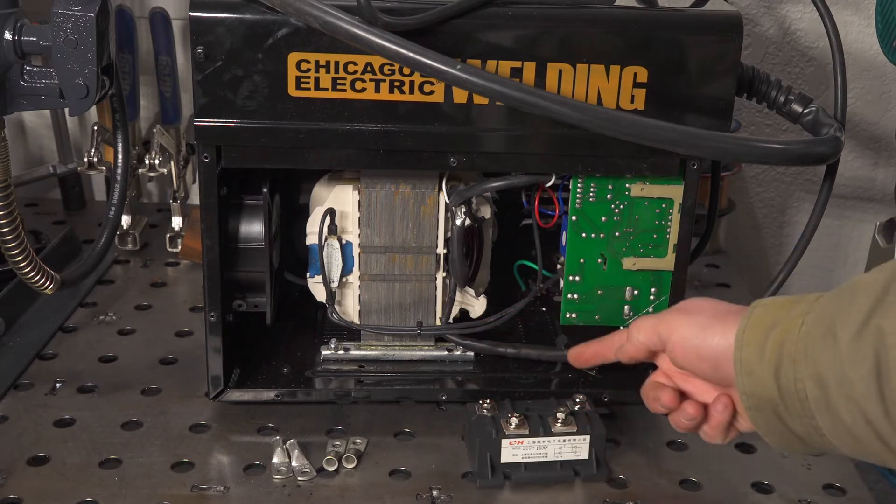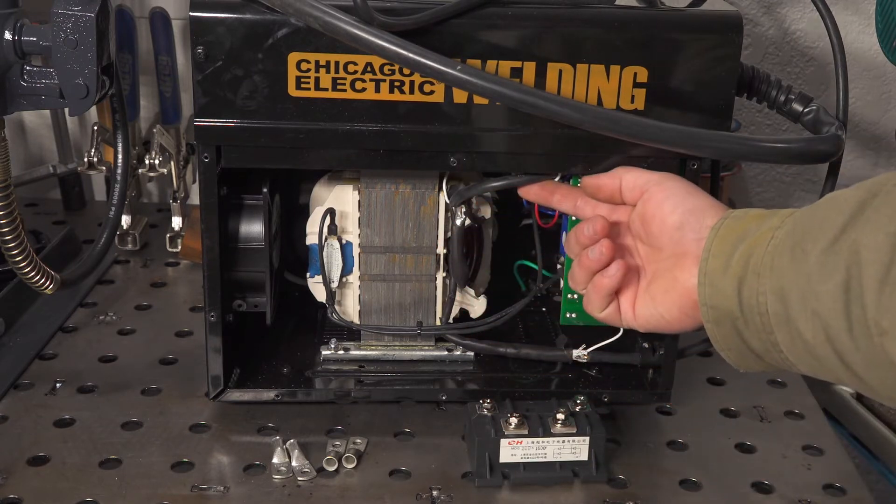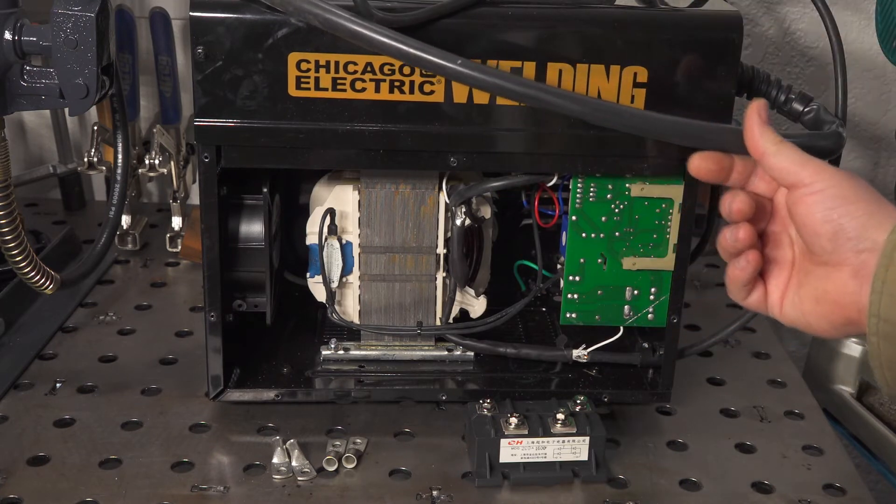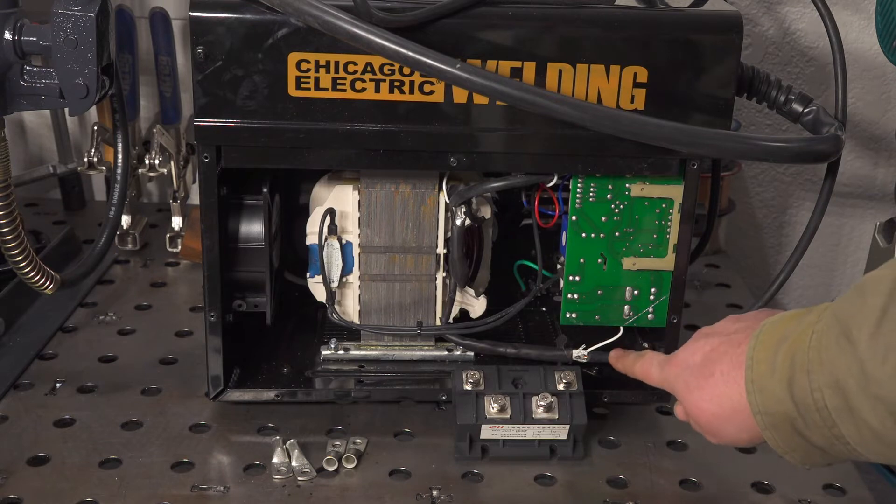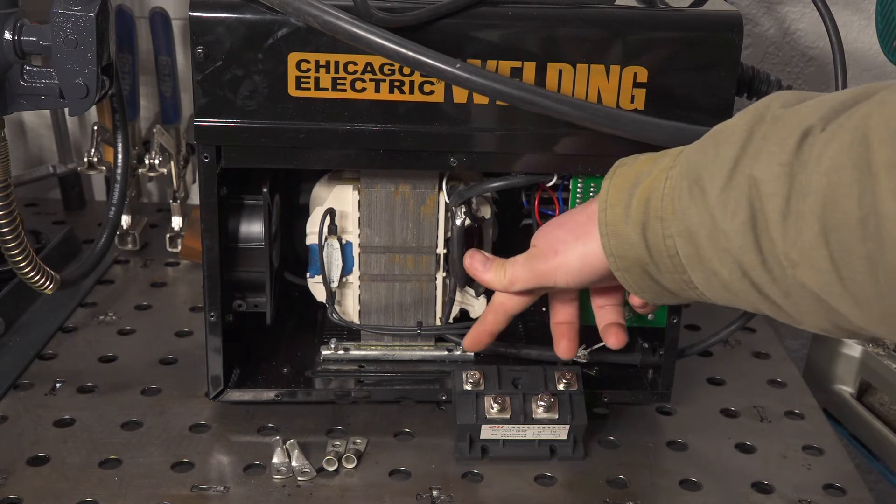So here we have the output from the transformer that goes to the work clamp and here we have the output of the transformer that goes to the MIG gun that powers up the contact tip. So all you really have to do is just basically cut these wires.